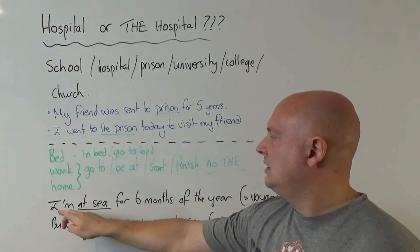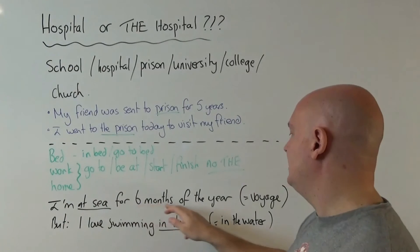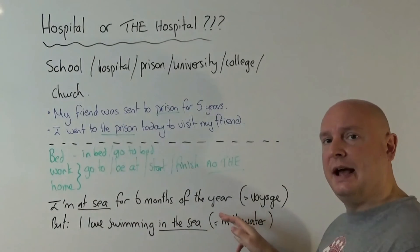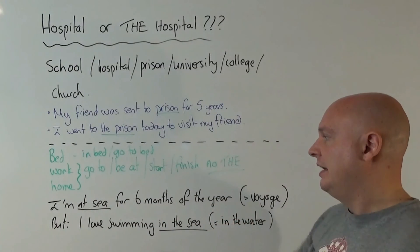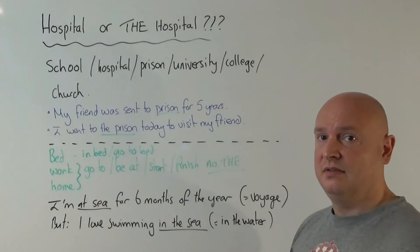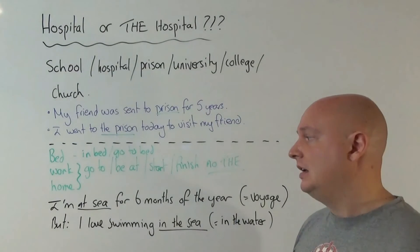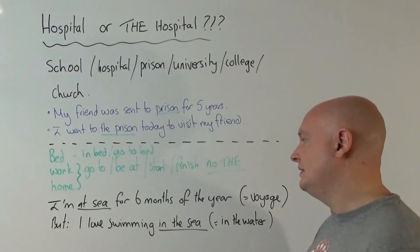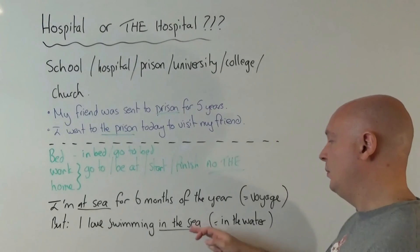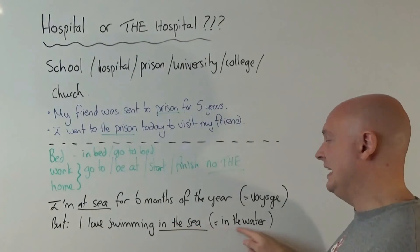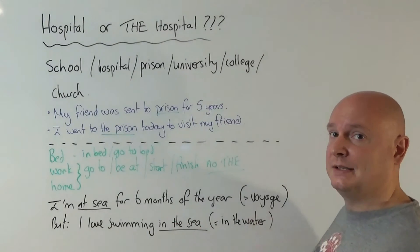Look at this. I'm at sea. I'm at sea for six months of the year — we're talking about a voyage. If there's no article with sea, the meaning is completely different. I'm at sea for six months, but I love swimming in the sea. With the article, it means in the water, and it doesn't mean voyage.